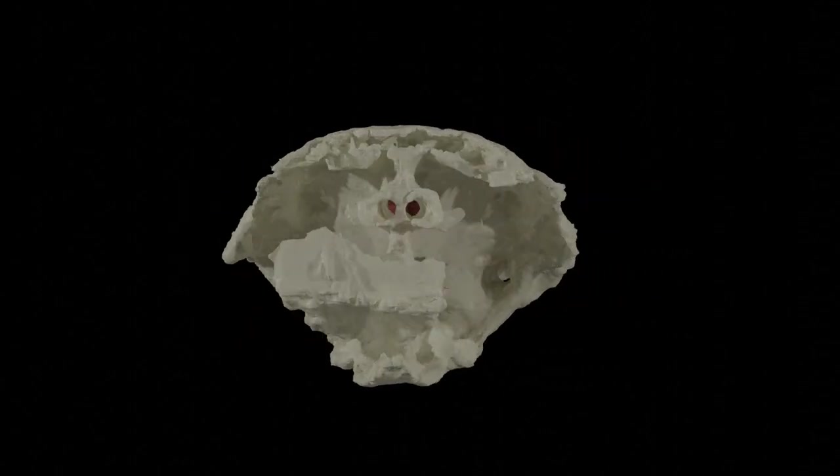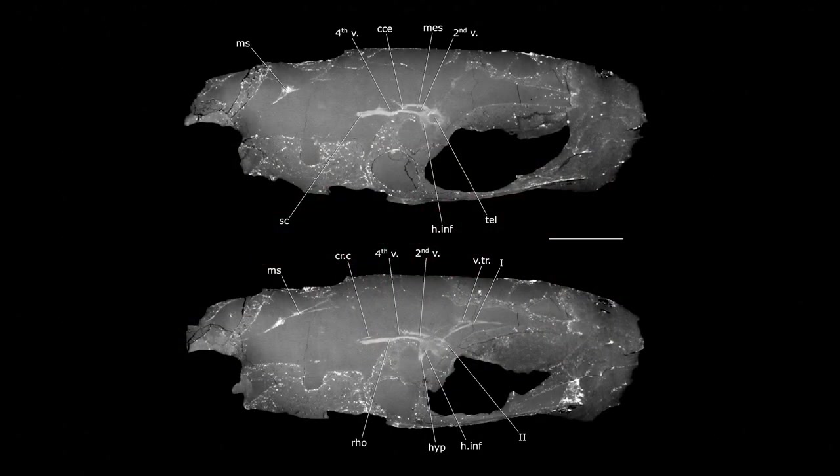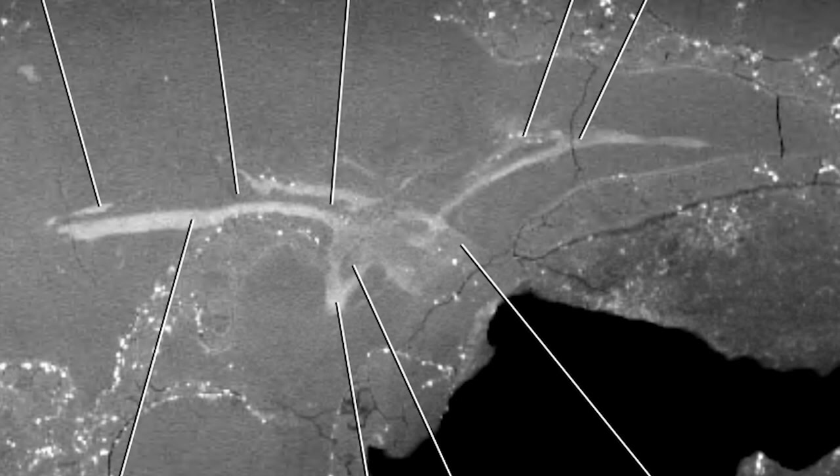Then we use that information to extract and reconstruct a 3D model of that brain. All these labels that you see are different important structures of the brain. So for example, CCE would be the cerebellum of the fish. Then the middle part, those are some of the cranial nerves.